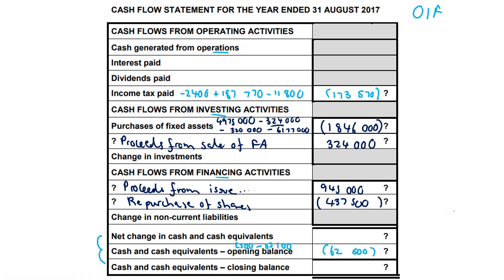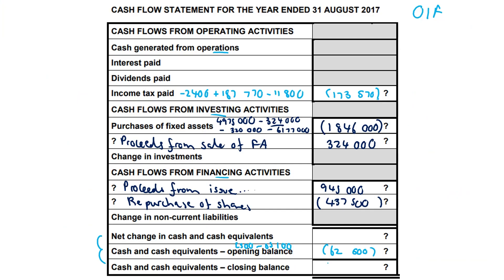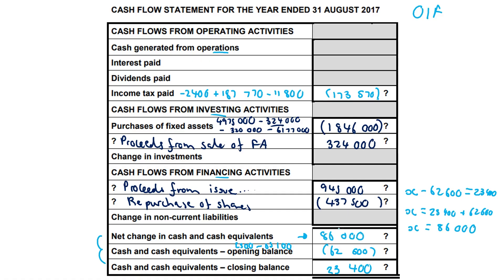Our closing balance is 23,400 — we plug that in immediately. We need to calculate the net cash movement, call it x. So: x minus 62,600 equals 23,400. To solve for x, we isolate it: x equals 23,400 plus 62,600, so x equals 86,000. We slot that in and that's your complete cash flow statement.